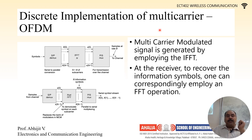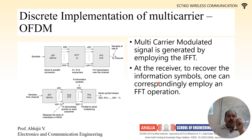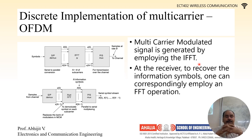This is a basic fundamental block diagram of an OFDM transmitter and a receiver. Previously we have understood that OFDM is a multi-carrier modulation which uses DFT and IDFT for transmission and reception. The multi-carrier modulated signal is generated by employing IFFT. At the receiver, to recover the information symbols, one can correspondingly employ FFT operation.